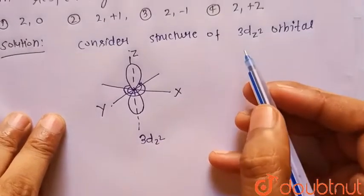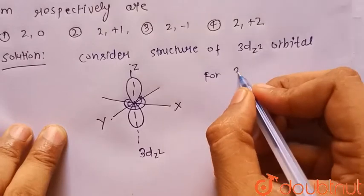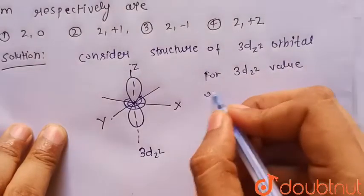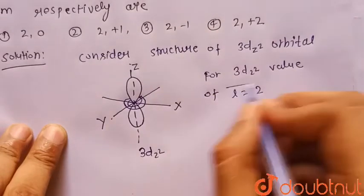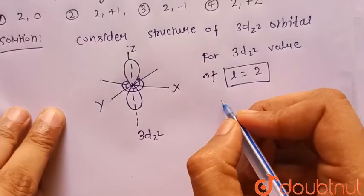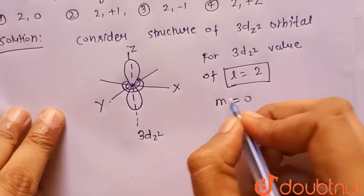Since it has d orbital, we know that for d orbital, for 3dz², value of L that is azimuthal quantum number is equal to 2. And for 3dz² orbital value of magnetic quantum number is equal to 0.